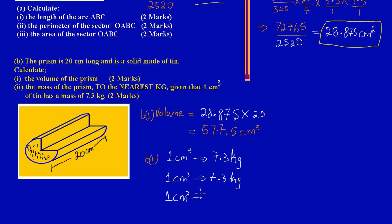I could go on to say one centimeter cubed maps onto another 7.3 kilograms, straight up to 577.5. We don't have the time for that, so we know that multiplication is repeated addition. To just add up the entire thing makes sense.